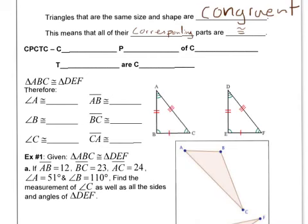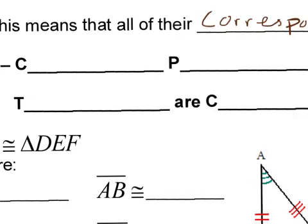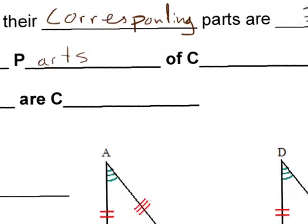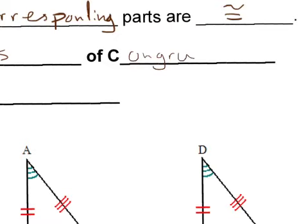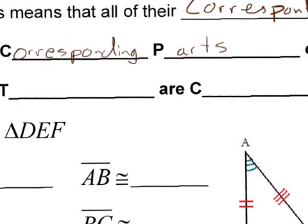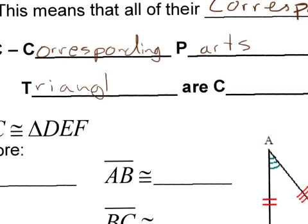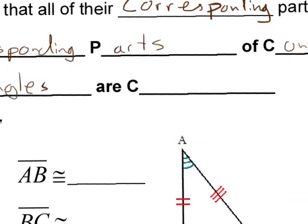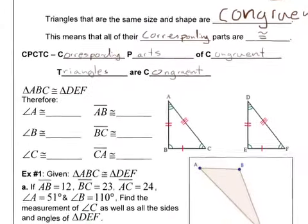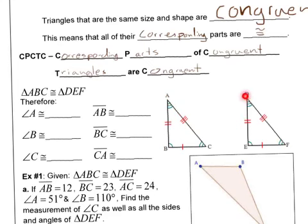And then we have this saying we're going to talk about: CPCTC. It stands for Corresponding Parts of Congruent Triangles Are Congruent. So if we have two triangles that are congruent, that means all of their corresponding parts are congruent.